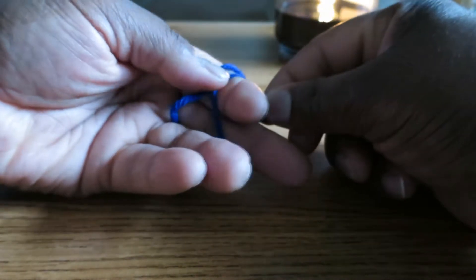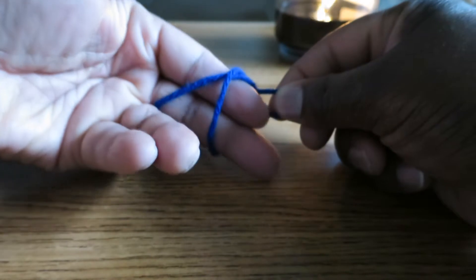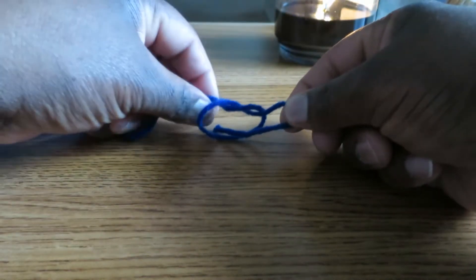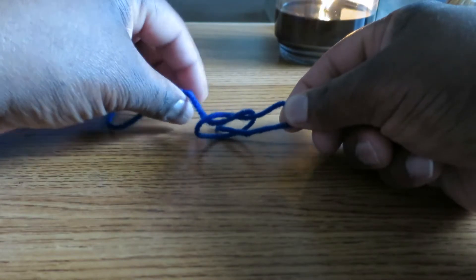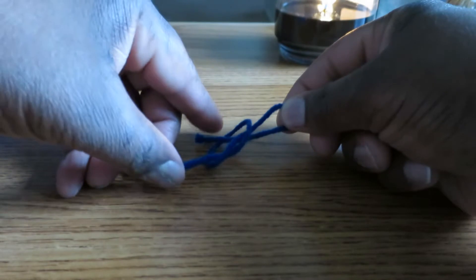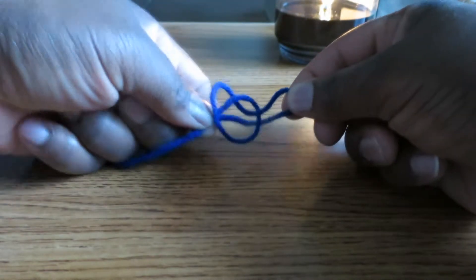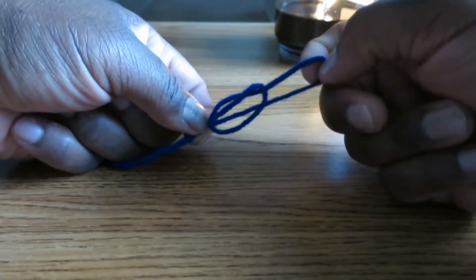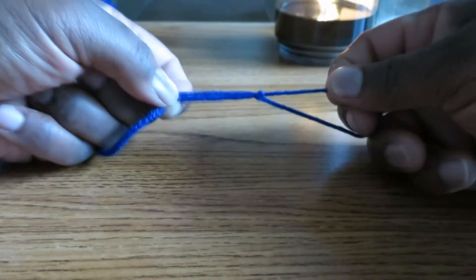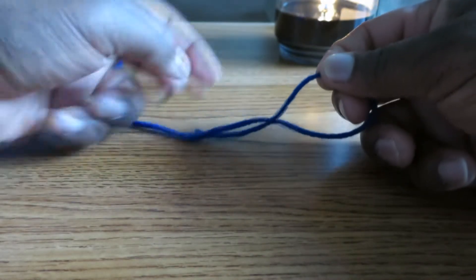Now we're going to hold on to that loop and let our fingers, our two fingers, slide out. We're going to grab this part, which is attached to the skein as well as the tail over here. Grab them like that. Hold them and then we're going to pull with the right hand on that loop and that creates the slipknot.